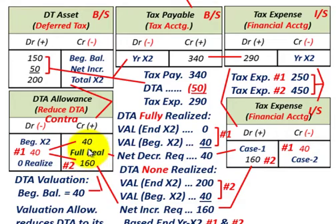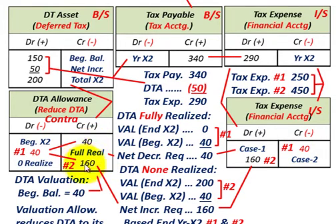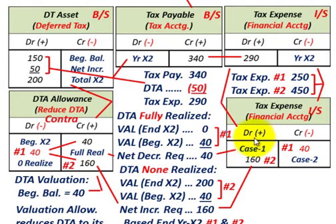For Case 2, we have to increase the credit by $160,000 because none of the $200,000 in your deferred tax asset is going to be realized. The balancing debit entry of $160,000 goes to tax expense on the income statement.